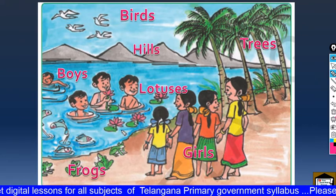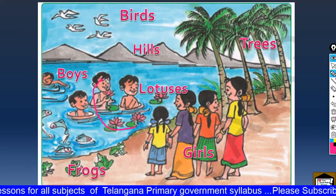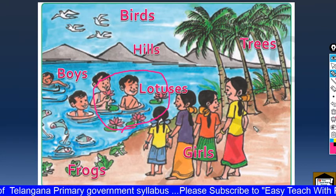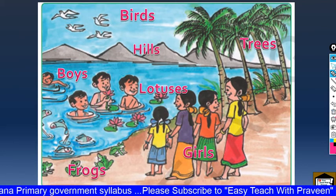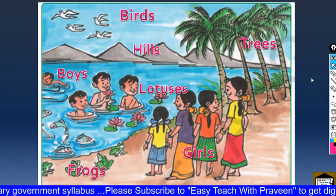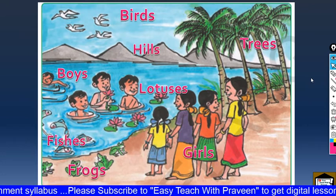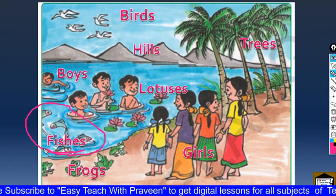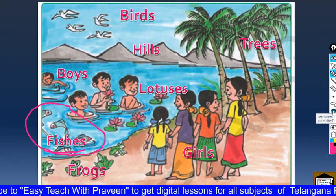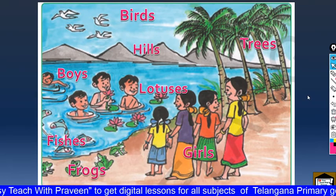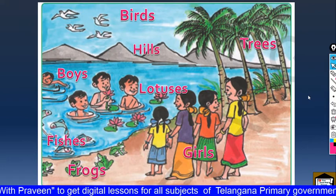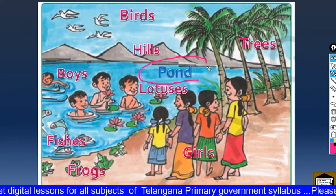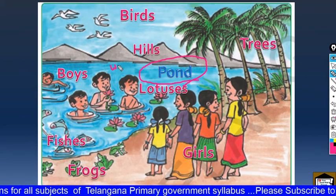Here are flowers. These flowers are called as lotus, lotuses. We are having some more — very good. These are called as fishes. Here is a pond. Very good. The pond has water in it.